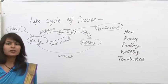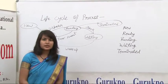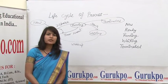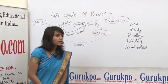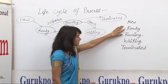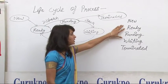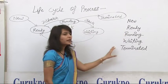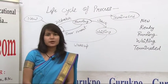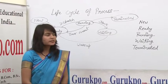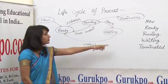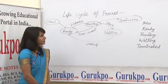A process in the life cycle goes through various stages called the states of the process. The first state is new, second is ready, third is running, then waiting, and terminated. A process can pass through various stages and at a time it can be in one of these states.